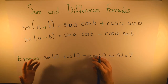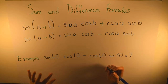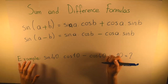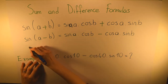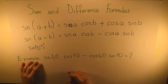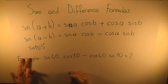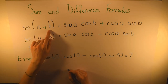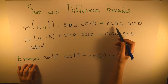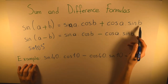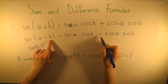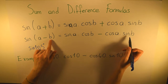We know how to find, for example, sine 120 degrees — we make it something familiar like sine 60 degrees. But how can we find the value of sine 105 degrees? We need some formulas. Here we have: sine(a+b) = sine a · cosine b + cosine a · sine b, and sine(a−b) = sine a · cosine b − cosine a · sine b.